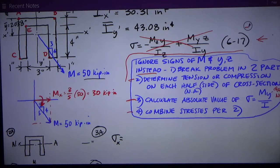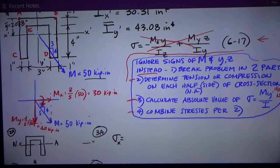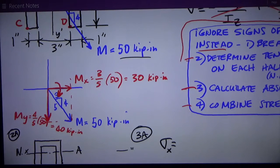I do the same thing for My. And it's equal to 4/5 of 50 or 40 kip-inches. Its direction of rotation from the right-hand rule is from the right to the left. So that's going to produce tension on the right side, compression on the left side. I'll transfer that information down to the next step.